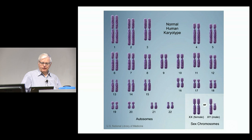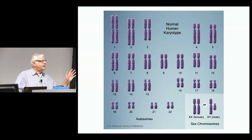You get one chromosome from each parent, then you get a sex chromosome — X or Y — which determines whether you're male or female. And that is essentially both the code and the operating system to generate a new individual.